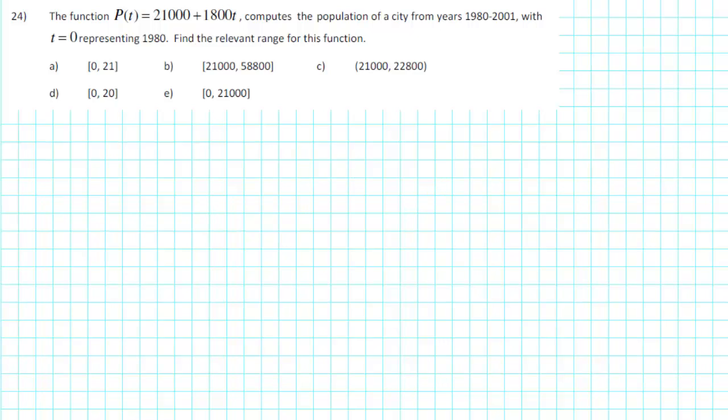The function P(t) = 21,000 + 1,800t computes the population of a city from years 1980 through 2001 with t = 0 representing 1980. Find the relevant range for this function.